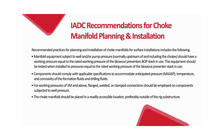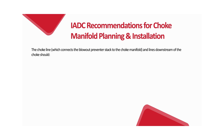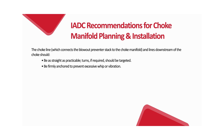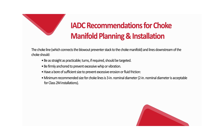The choke manifold should be placed in a readily accessible location, preferably outside of the rig substructure. The choke line connecting the blowout preventer stack to the choke manifold, and lines downstream of the choke, should be as straight as practicable; turns, if required, should be targeted. Lines should be firmly anchored to prevent excessive whip or vibration, and have a bore of sufficient size to prevent excessive erosion or fluid friction. Minimum recommended size for choke lines is 3 inches nominal diameter; 2 inches nominal diameter is acceptable for class 2M installations.